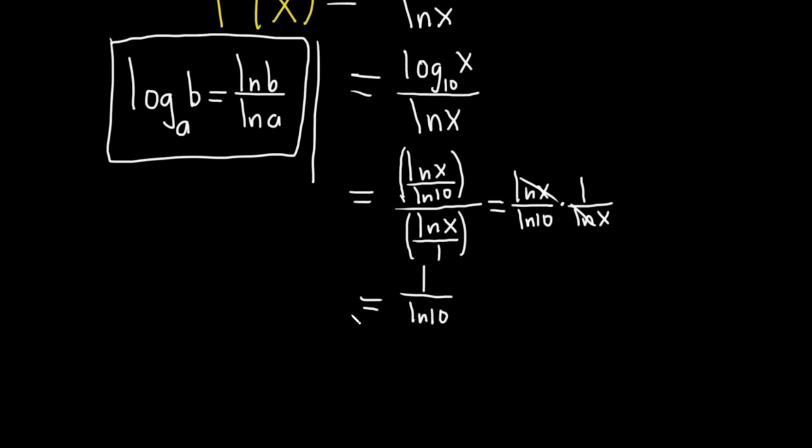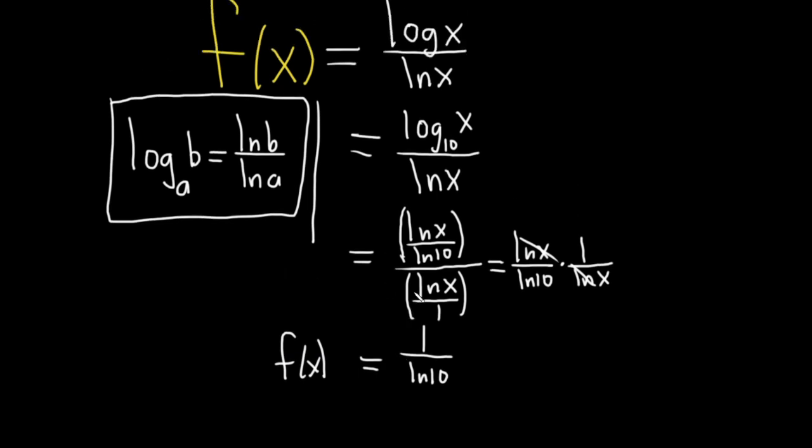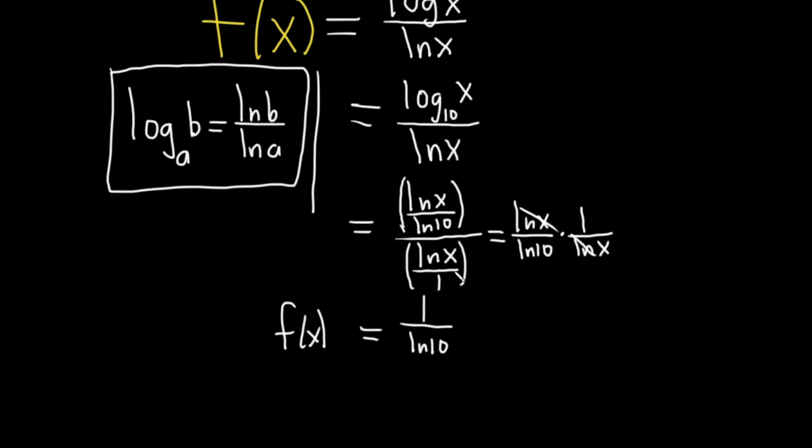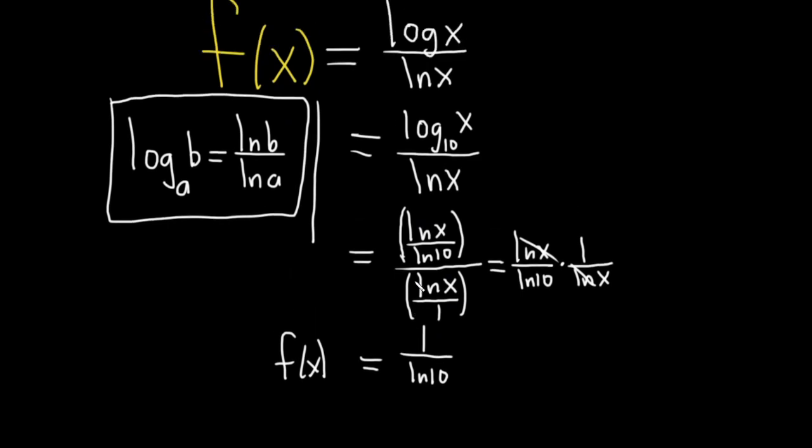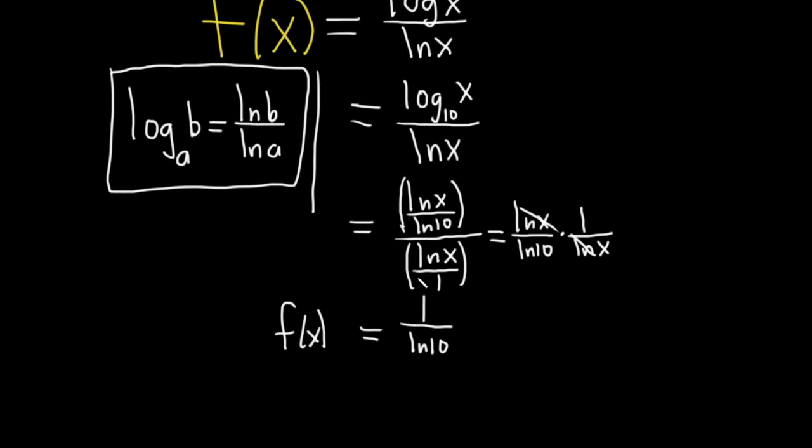And then so you get 1 over the natural log of 10. I would say typically in a class of 30 students, if I give this as an extra credit question, maybe, maybe one person will notice this. But oftentimes they'll still graph it wrong. And you're going to see why, right? There's a really subtle point to this graph. It's not hard. Once you see it, it's like, oh, I should have known that. It's easy. But if you don't see it, it's tough.